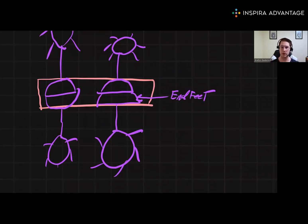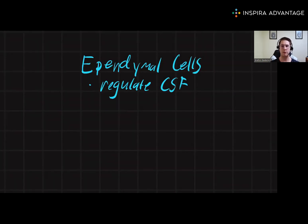Another important glial cell to know are ependymal cells. These cells play a role in regulating cerebral spinal fluid in the central nervous system. These cells line fluid-filled cavities in the brain. Another key cell to know are called microglia.